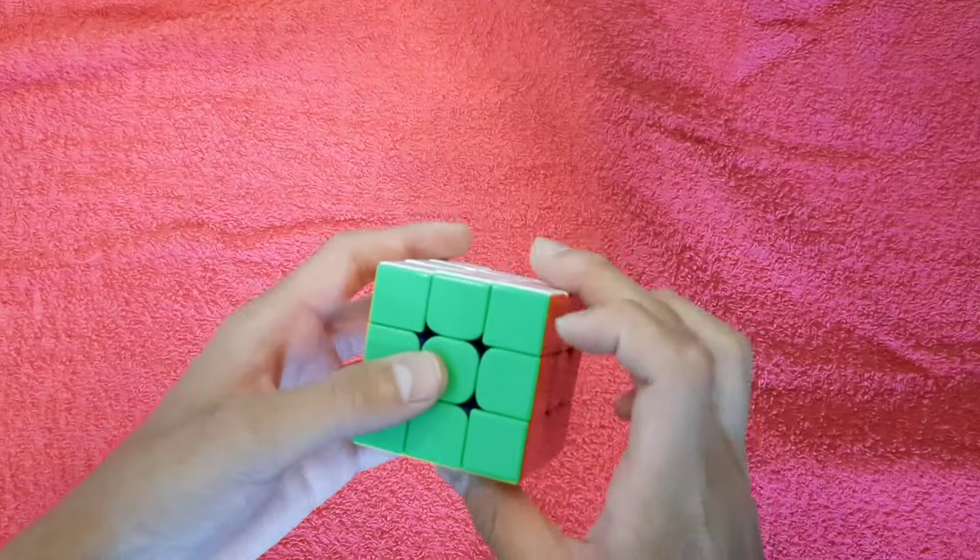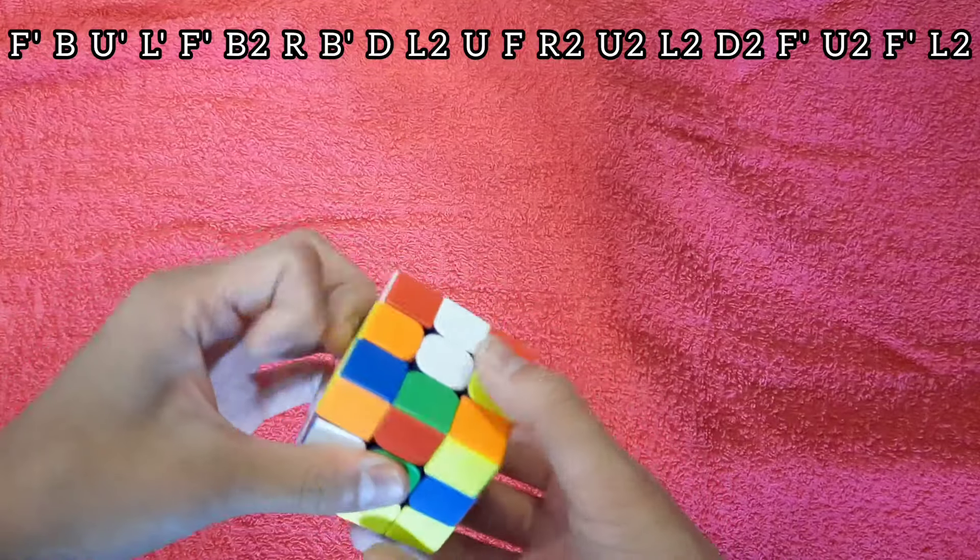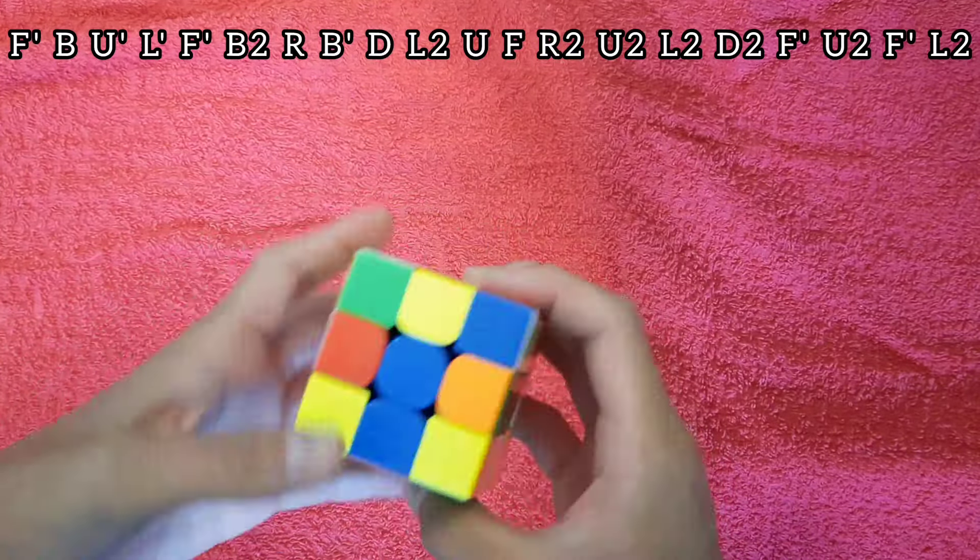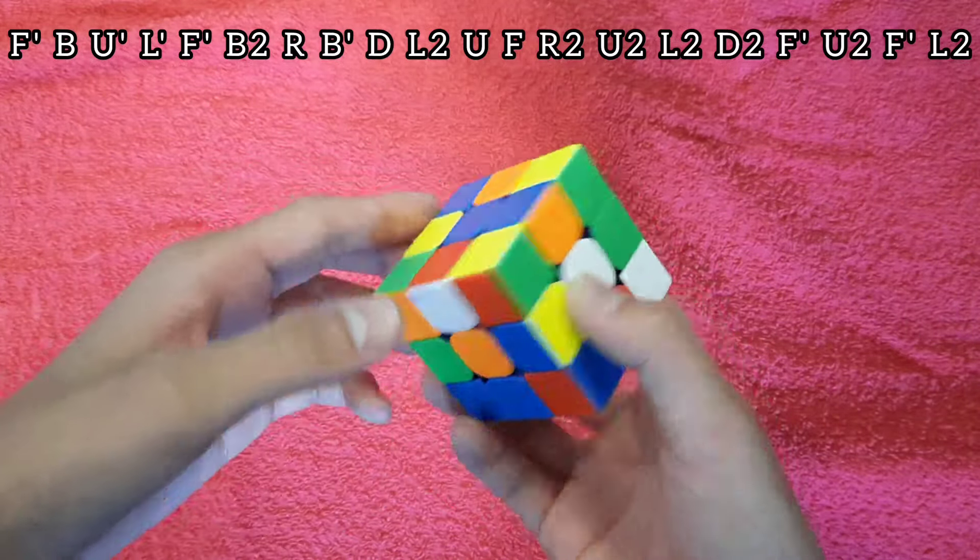Alright, this is just a quick reconstruction of my 6.15 PB single that I broke after one year and one month, so the scramble should be on screen.